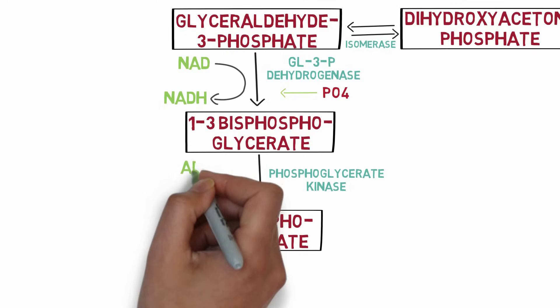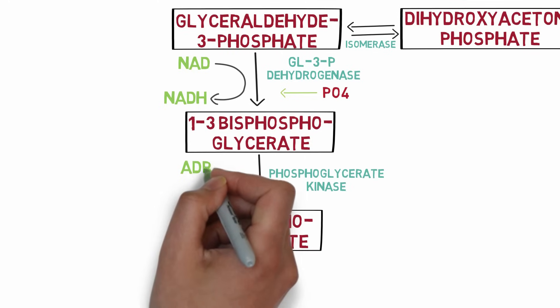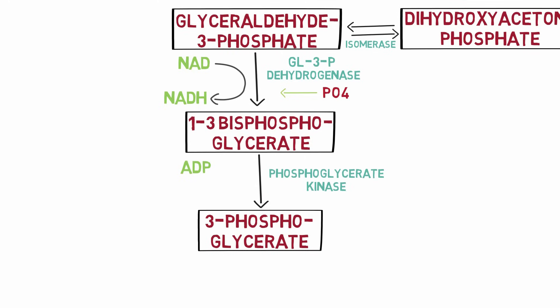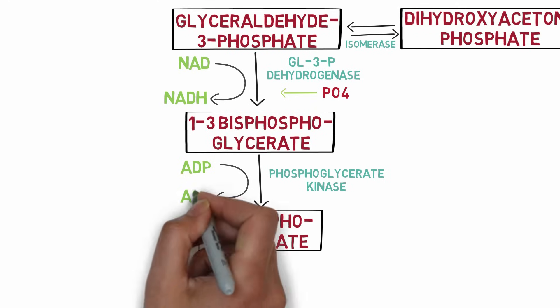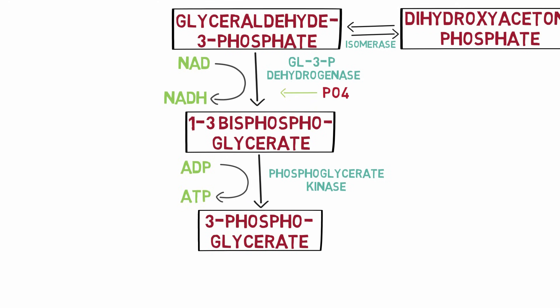Next, 1,3-bisphosphoglycerate is converted to 3-phosphoglycerate by the enzyme phosphoglycerate kinase. This kinase transfers the phosphate group at the first position of the bisphosphoglycerate to ADP, and in this process a molecule of ATP is generated.